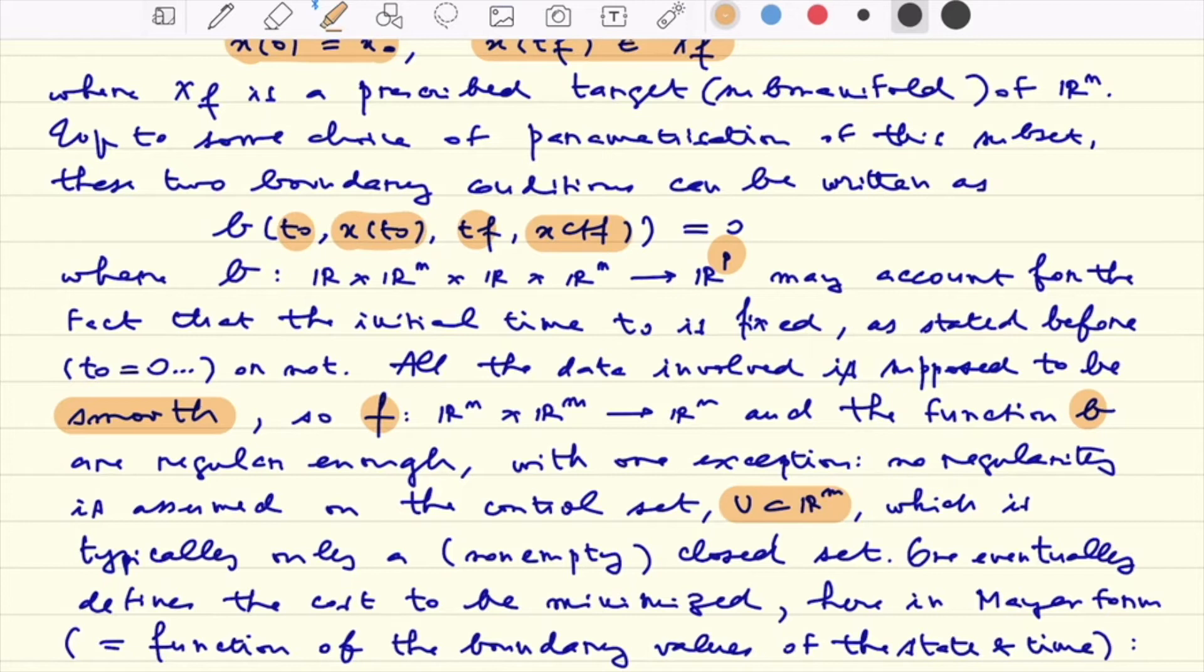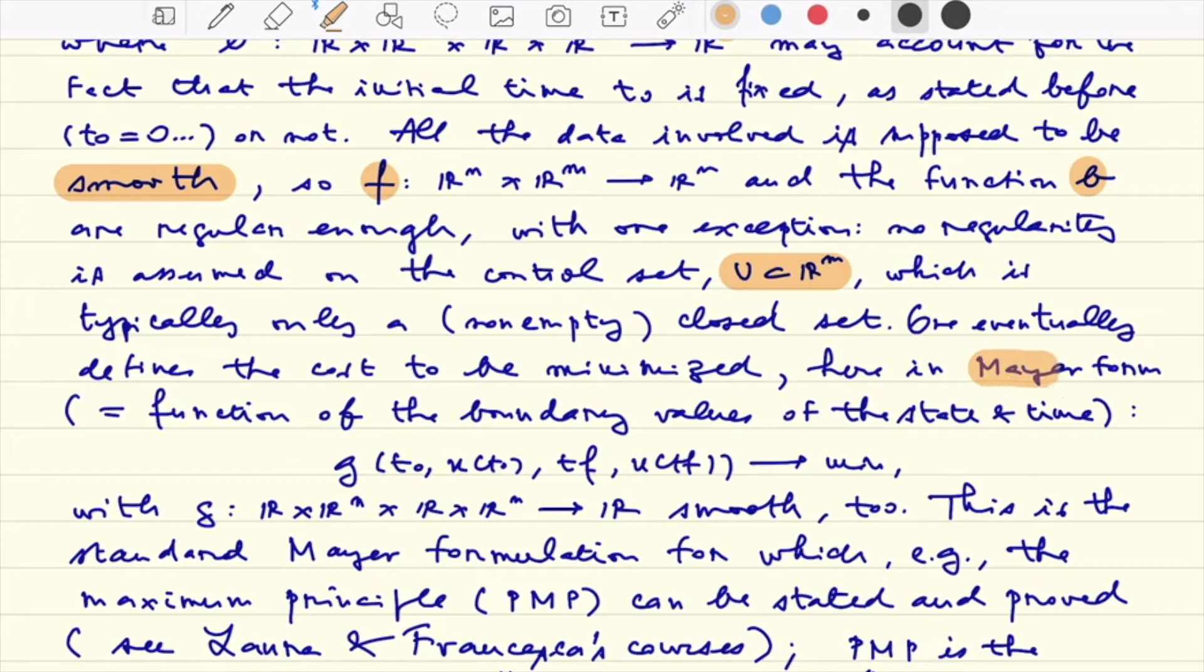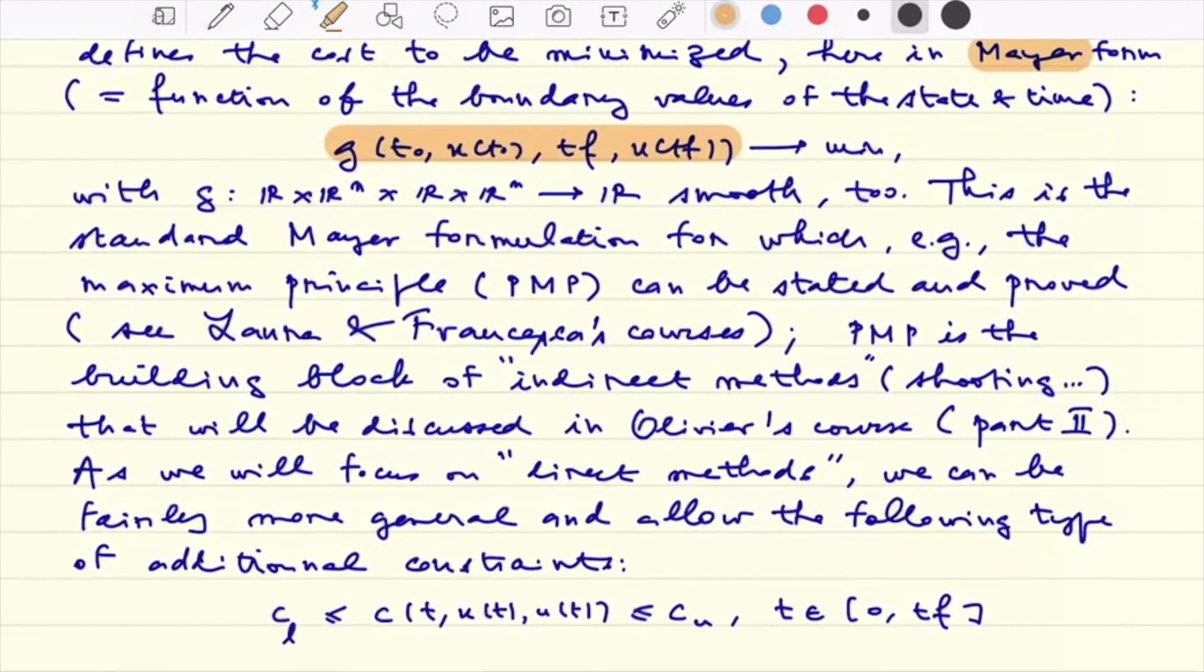The only thing that is not completely clear in the control setting is that there is one thing which is usually not smooth. It is the control set U which is in general just a closed non-empty subset. The control has the nice habit to live on the boundary of U. But I will assume that I have some nice parameterization of the set U at least in terms of inequalities. Now the cost to be minimized, I will assume we are in the so-called Mayer form which means that I do not have a Lagrange cost but a cost which depends on the boundary values of the state only.